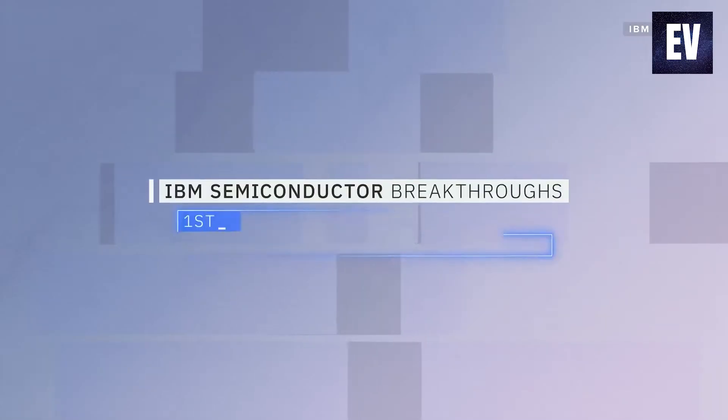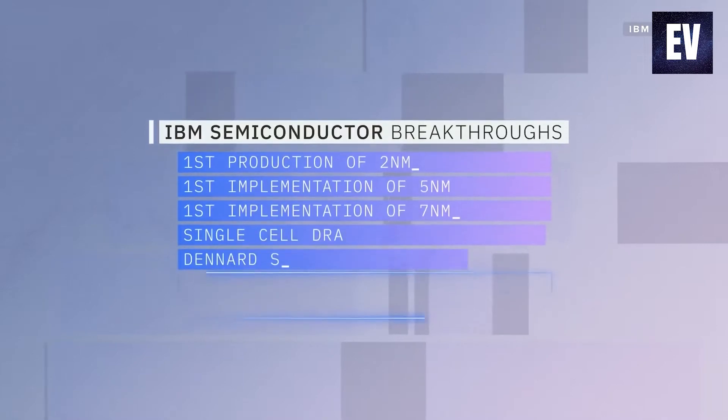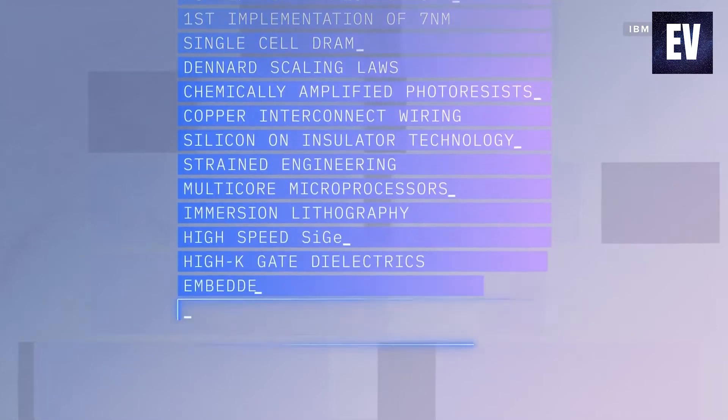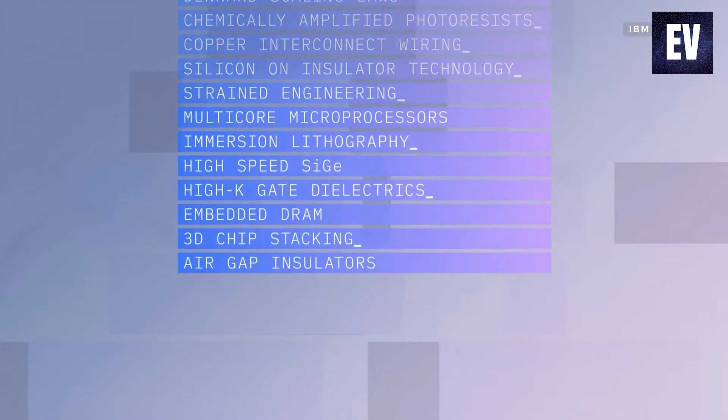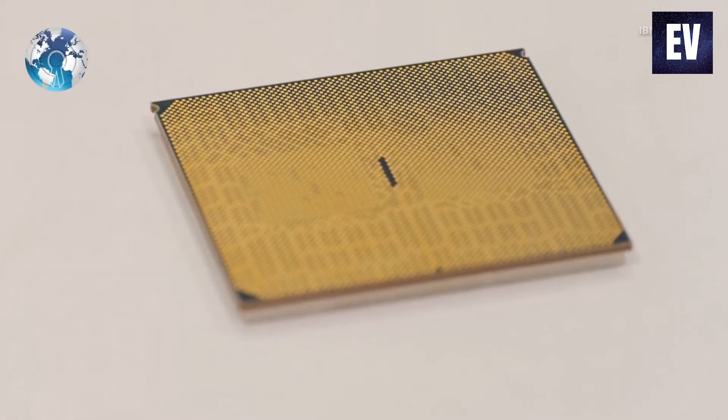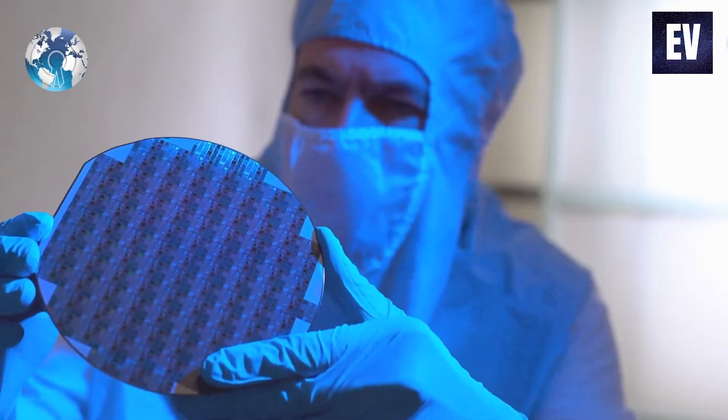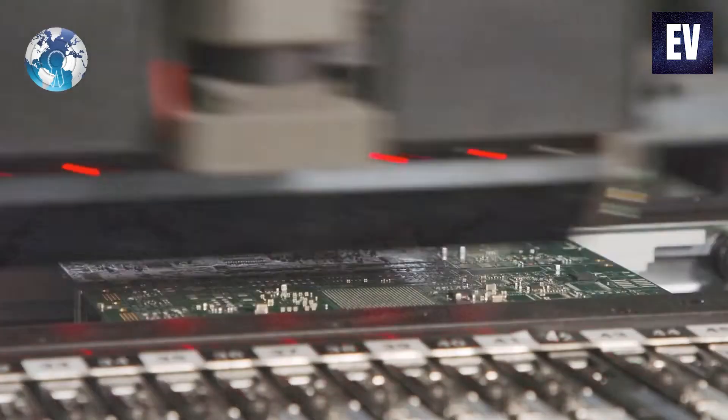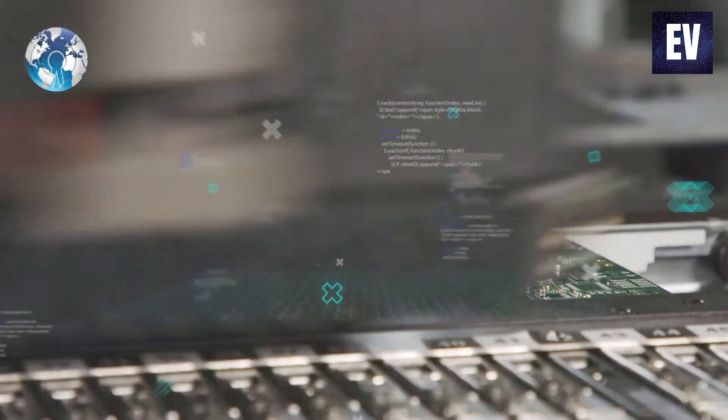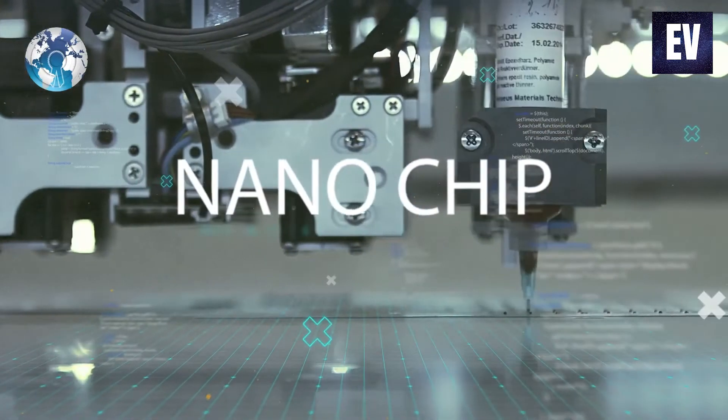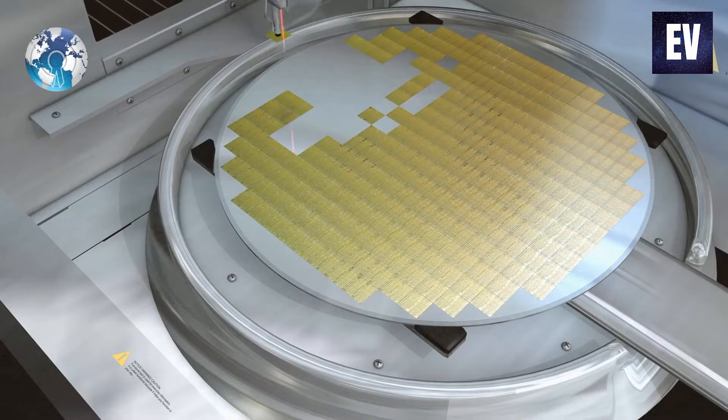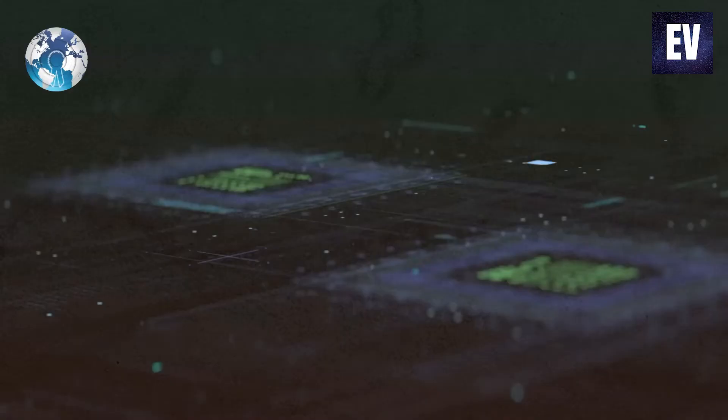With the help of its research facility in Albany, New York, the technology company IBM revealed that it has succeeded in creating a microchip with a size of only 2 nanometers. This is a significant step forward in the processor business because it is the tiniest chip to date, and it is likely to have widespread implications for the technology sector.